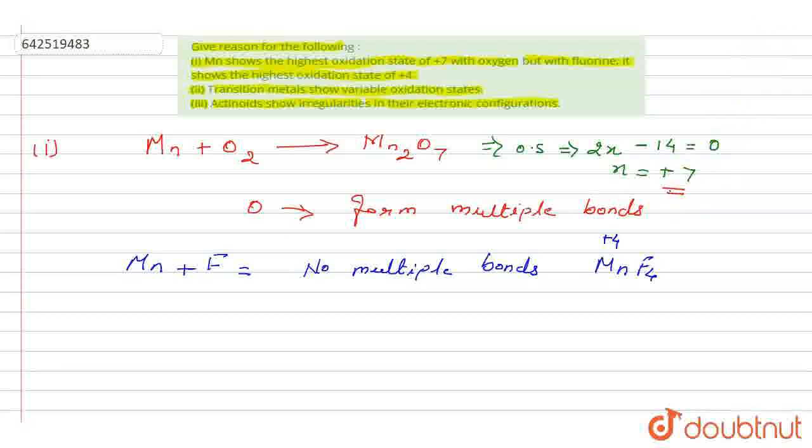Now let's see our second question. It is given that transition metals show variable oxidation states. We know that transition metals show variable oxidation states due to incomplete filling of the d-orbitals.